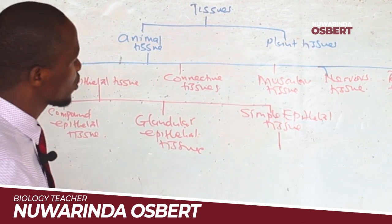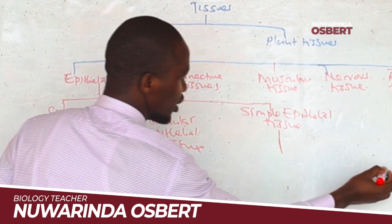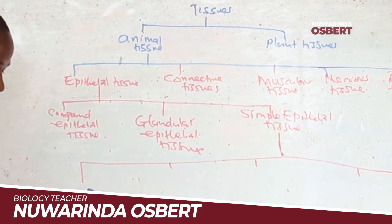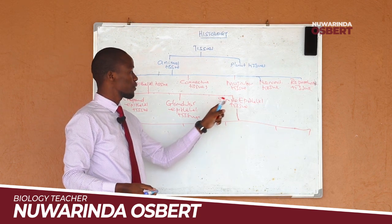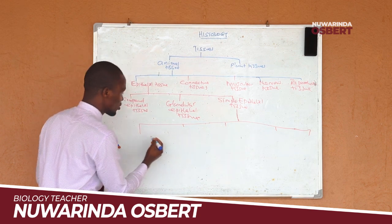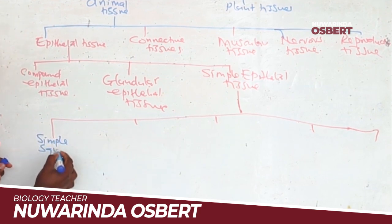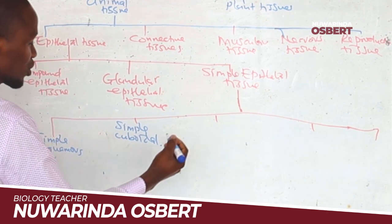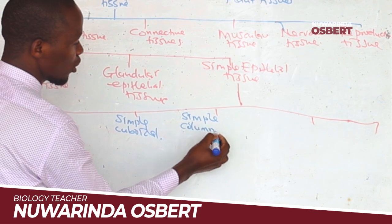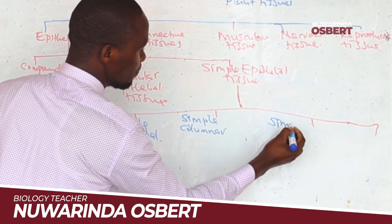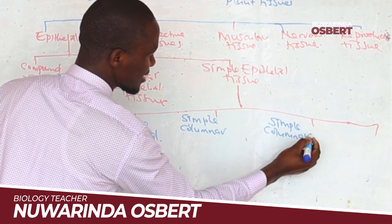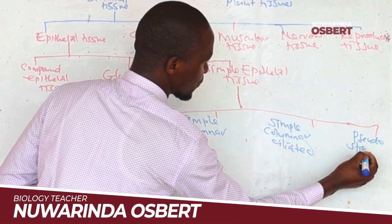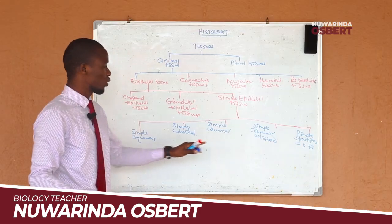We also saw that simple epithelial tissue is categorized into many other categories depending on the shape of the cells. Those categories are: simple squamous, simple cuboidal, simple columnar, simple columnar seriated, and pseudostratified epithelial tissue.